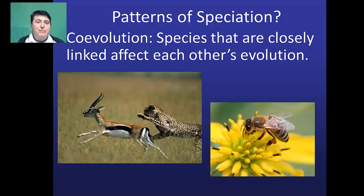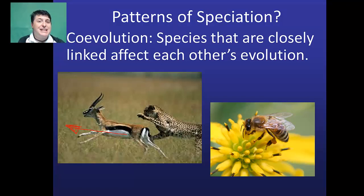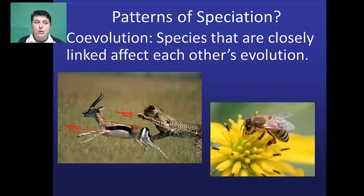Another pattern of speciation is co-evolution, which occurs when species that are closely linked affect each other's evolution. Predator-prey relationships often exhibit this — as a prey species develops an adaptation to run faster, this becomes a selective factor for the predator, so only predators that can run as fast survive and reproduce. We may also see co-evolution with pollen producers and pollinators: as structures change on pollen producers, only those pollinators with compatible structures are able to survive and reproduce.